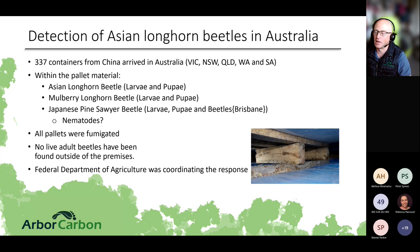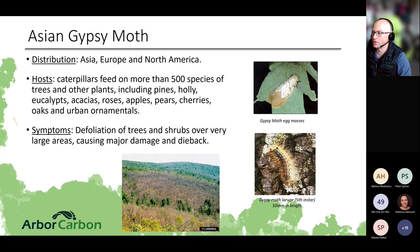Fortunately, all pallets were fumigated and the federal government ran a detection program for over four years — since the insect's gestation period is up to three to four years — and no insects were found. Since those detections, a national trapping and pheromone program for Asian longhorn beetle has been established, and botanical gardens and local government gardens are encouraged to participate by setting up traps and reporting back.